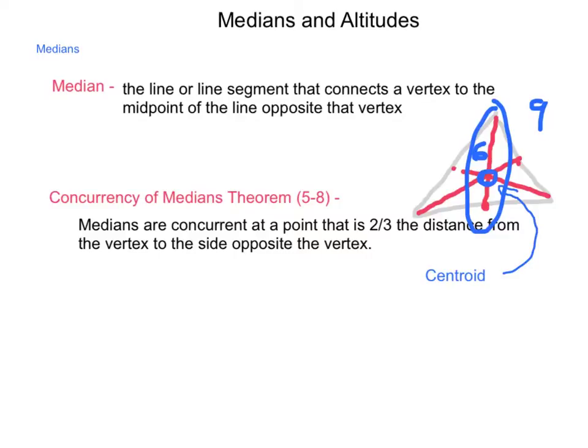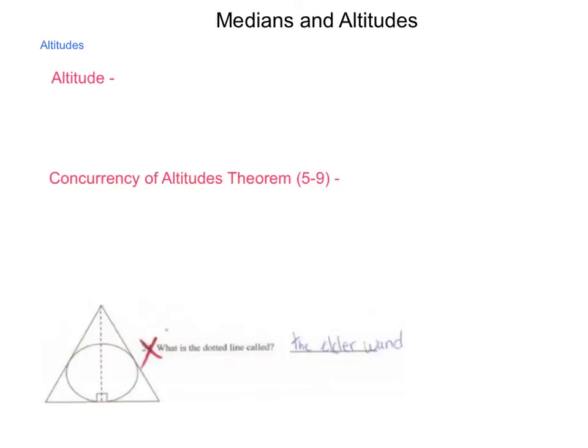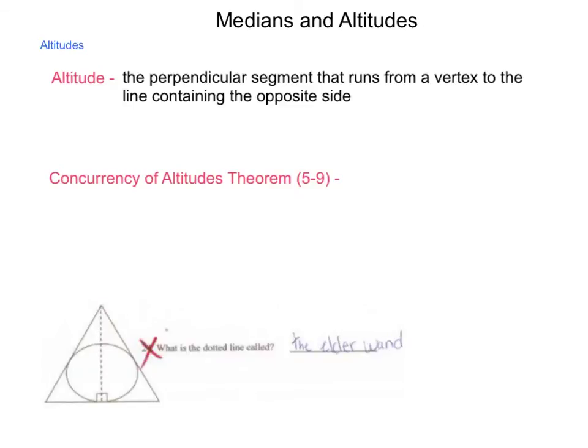So again, vocabulary, we're going to start with just what is an altitude. Quite simply, an altitude is the perpendicular segment that runs from a vertex to a line containing the opposite side.